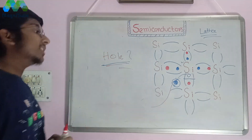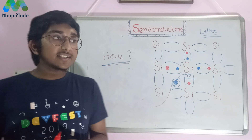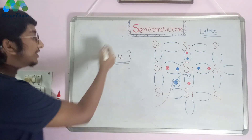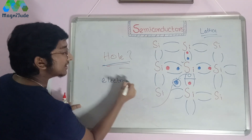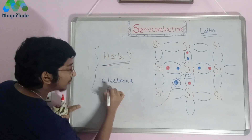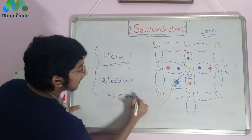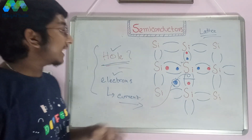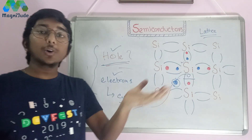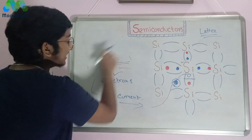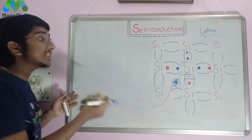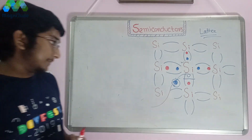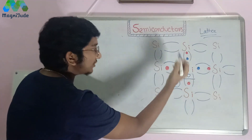Now there is another important concept: the movement of holes and the movement of electrons. Both the holes and the electrons contribute to the flow of current. My topic now is how we can visualize the motion of holes and the flow of electrons. It's not very difficult — you just need to understand the concepts and be able to imagine these things.